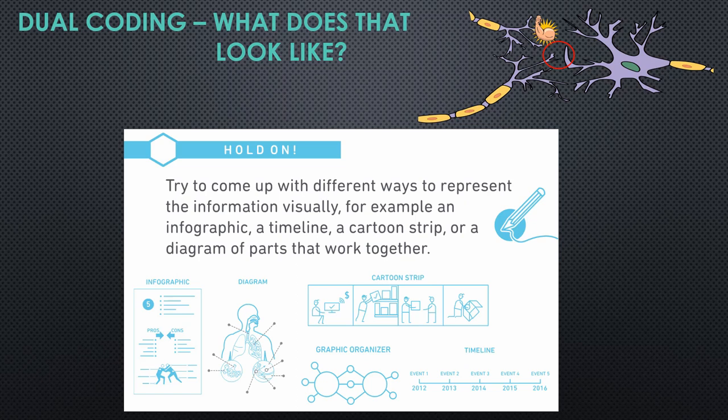So what does dual coding look like? You might create infographics which match pictures and words for a topic, you might just have diagrams, you might make cartoon strips, graphic organizers, or timelines. We've included a whole bunch of template graphic organizers, cartoon strips, and timelines for you to use in your consolidation work at home.